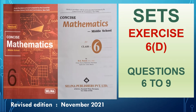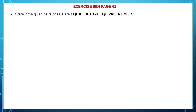Hello children, let's do sets exercise 6D, questions 6 to 9. This is found on page number 62. State if the given pairs of sets are equal sets or equivalent sets. So we are going to continue to do types of sets.